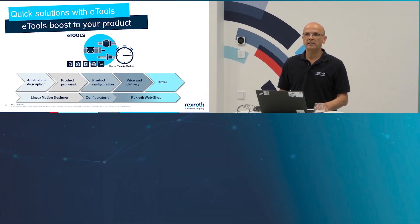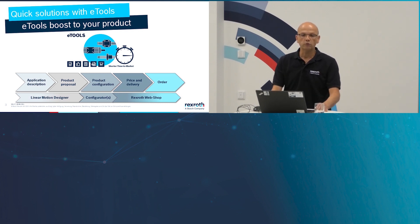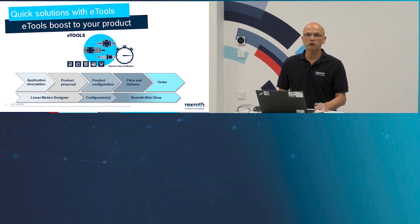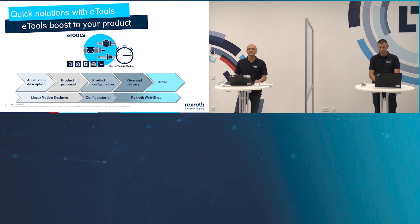The whole process contains five steps. In the application description, we define the dynamics, the geometry, and the forces. Based on this information, we make the product selection and product recommendation. When we go to the configurators, we define these products completely. For these completely defined products, you can get information like delivery time and price, and you can complete the ordering process independently. We linked our eTools — the calculation program Linear Motion Designer, the configurators, and our web shop. You only have to enter the same data one time, saving time and money.